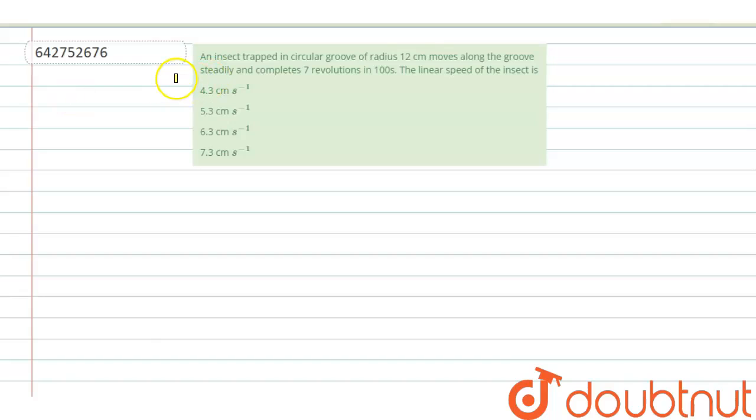Hello students, the question is: an insect trapped in circular groove of radius 12 centimeter moves along the groove steadily, means with constant speed, and completes 7 revolutions in 100 seconds. The linear speed of the insect is what?